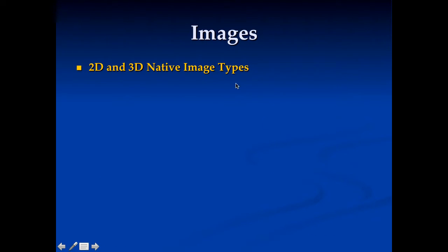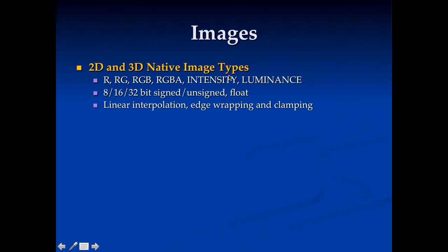OpenCL supports 2D and 3D image types natively, which makes sense since it's designed to work with GPUs that do a lot with images. You have multi-channel images, intensity images, all sorts of things, and lots of formats: 8, 16, 32-bit, signed, unsigned, and float.